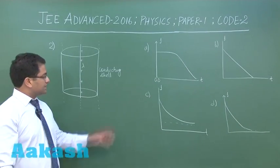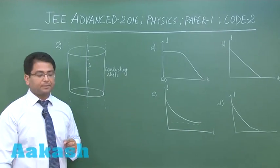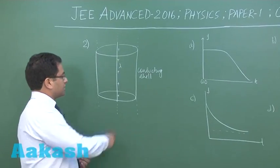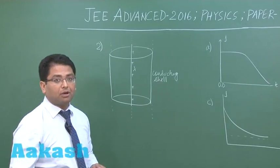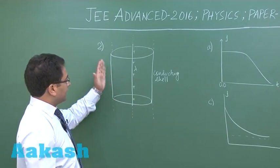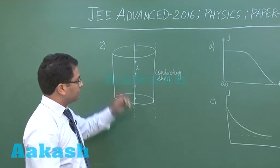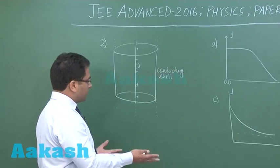Question number two is from current electricity. There is an infinitely long line charge with density lambda coulombs per meter, and outside there is a cylindrical conducting shell which is also infinitely long. Initially there is no means of conduction between them.